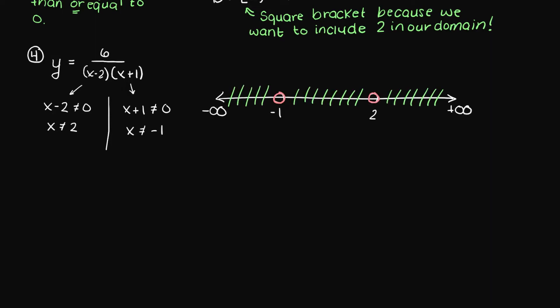Writing this answer in interval notation, we have capital D, colon, round bracket, negative infinity up to, but not including negative 1, union, not including negative 1 up to, but not including 2, union, and then every input from, but not including 2, to positive infinity.